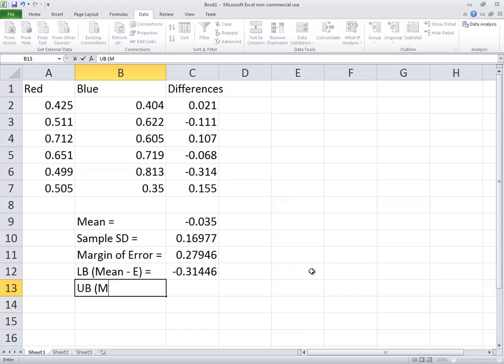And then our upper bound. This is the mean plus our margin of error. So we're going to have equals our mean, so we'll do C9, plus our margin of error, which is C11. And then press enter.